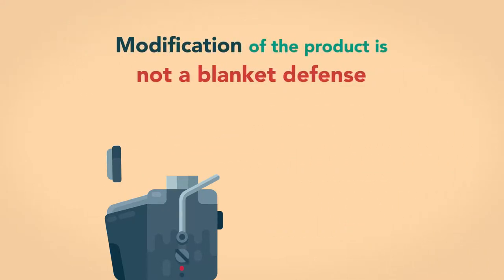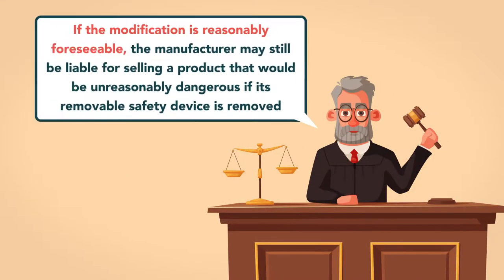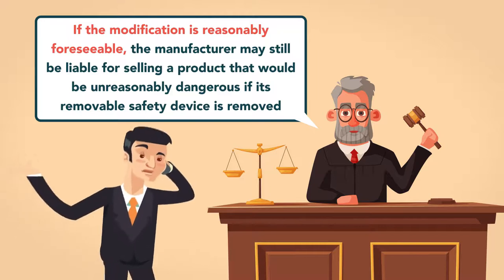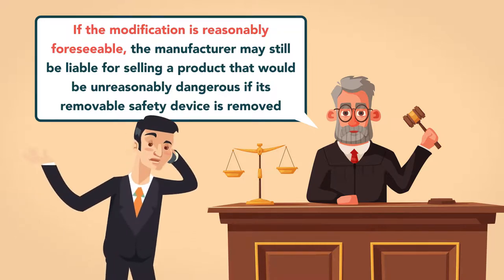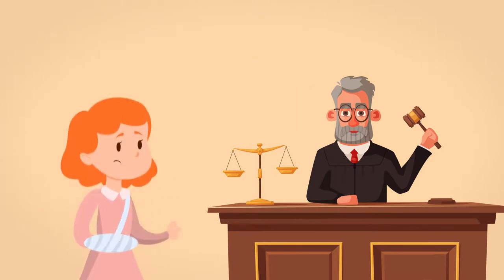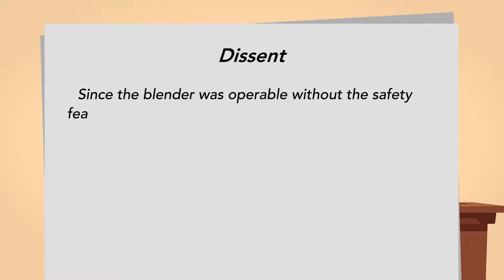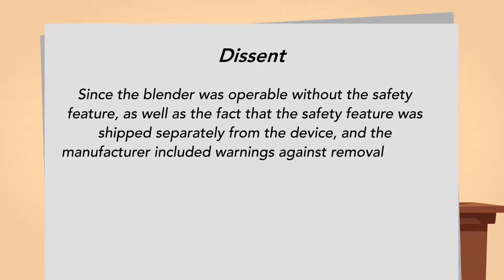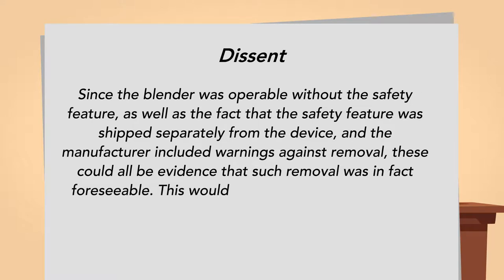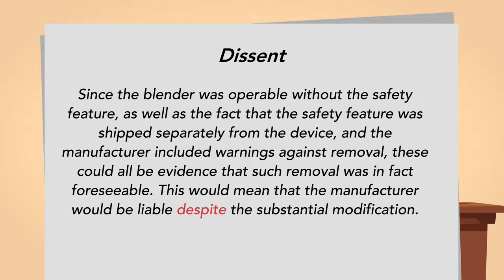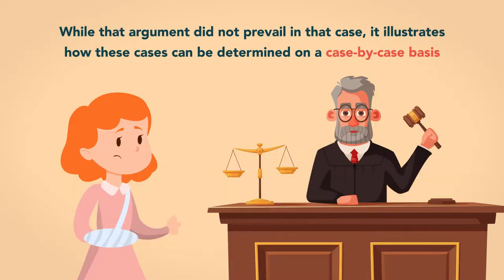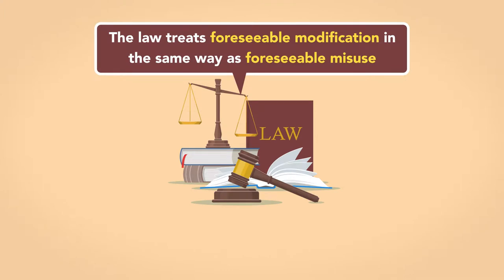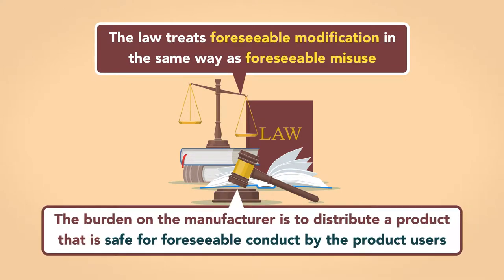Note, however, that modification of the product is not a blanket defense for a manufacturer. Courts have held that if the modification is reasonably foreseeable, the manufacturer may still be liable for selling a product that would be unreasonably dangerous if its removable safety device is removed. In fact, the dissent in the meat factory case argued that since the blender was operable without the safety feature, as well as the fact that the safety feature was shipped separately from the device, and the manufacturer included warnings against removal, these could all be evidence that such removal was in fact foreseeable. This would mean that the manufacturer would be liable despite the substantial modification. While that argument did not prevail in that case, it illustrates how these cases can be determined on a case-by-case basis. The law treats foreseeable modification in the same way as foreseeable misuse; in both cases, the burden on the manufacturer is to distribute a product that is safe for foreseeable conduct by the product users.